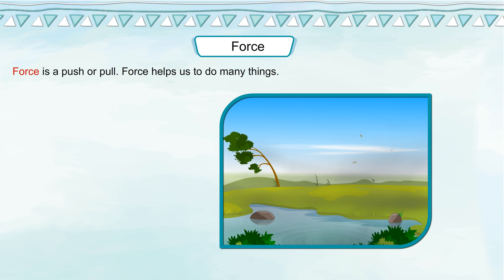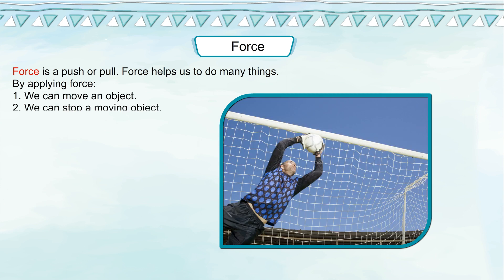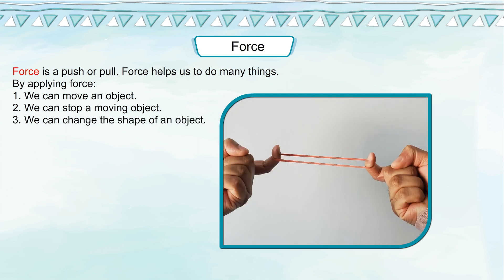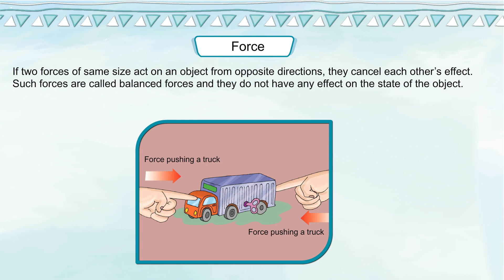Force — force is a push or pull. Force helps us to do many things. By applying force: we can move an object, we can stop a moving object, and we can change the shape of an object. If two forces of the same size act on an object from opposite directions, they cancel each other's effect. Such forces are called balanced forces and they do not have any effect on the state of the object.